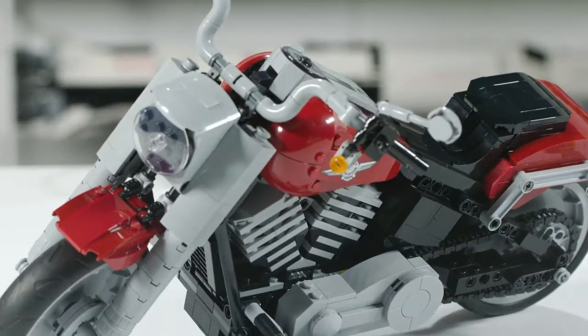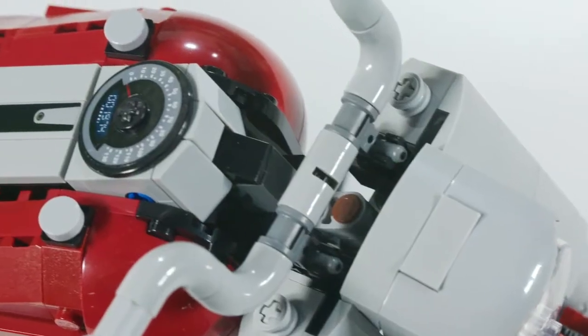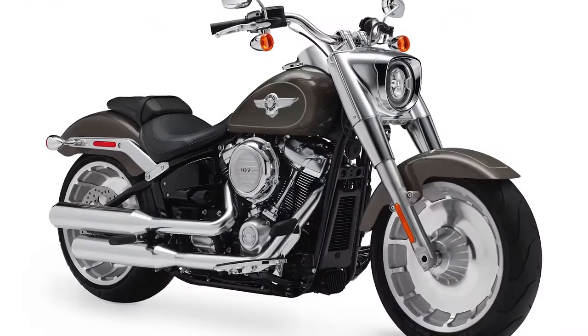This is a roughly 1:6 scale version of a Harley-Davidson Fatboy. That's a motorcycle that got released in 1990. We've made the dark red version of their newest model.